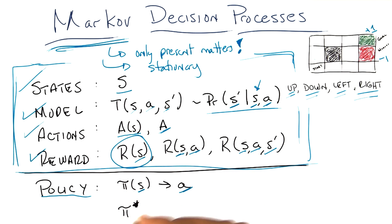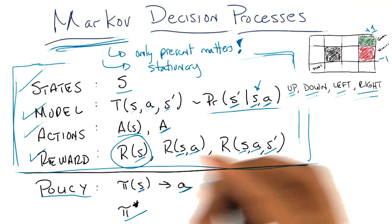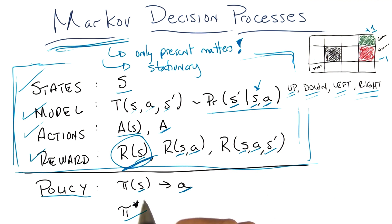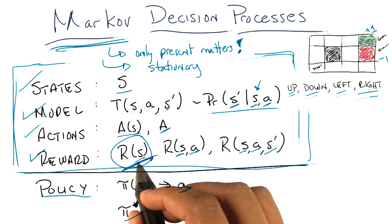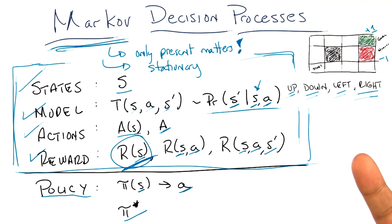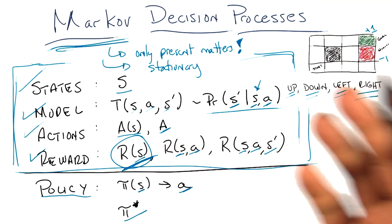There's a special policy, which I'm writing here as policy star, or the optimal policy. And that is the policy that maximizes your long-term expected reward. So of all the policies you could take, of all the decisions you could take, this is the policy that optimizes the amount of reward that you're going to receive, or expect to receive, over your lifetime.